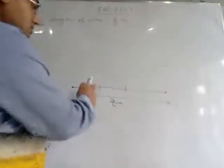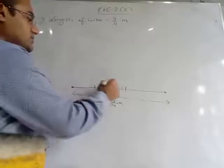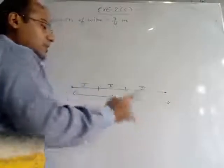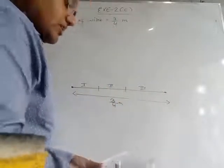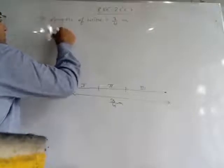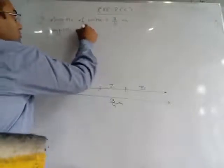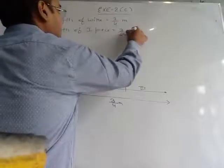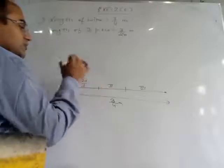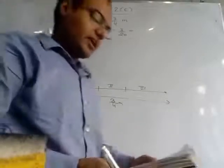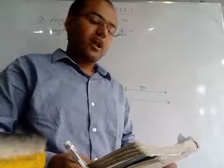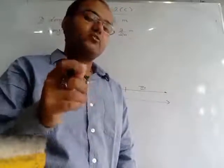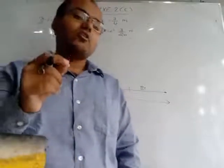This is the 1st part, this is the 2nd part, and this is the 3rd part of the rope. In the question, the length of the 1st piece is 3/20 meter. The length of the 2nd piece is given as 5/3 of the 1st — 5/3 has no unit, so this is a fraction, not a length measurement.